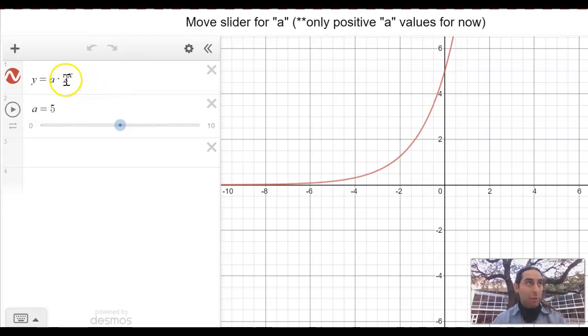So now our b value is going to be two. What happens when we change a? What happens when we change the a value? So right now it's at five. I'm going to move around a little bit. You can see it's kind of moving. I'm going to move it all the way to the right. It looks like it's kind of going up. And then I move it to the left. It looks like it's kind of going down until it flattens out. So the question is, what's happening here?